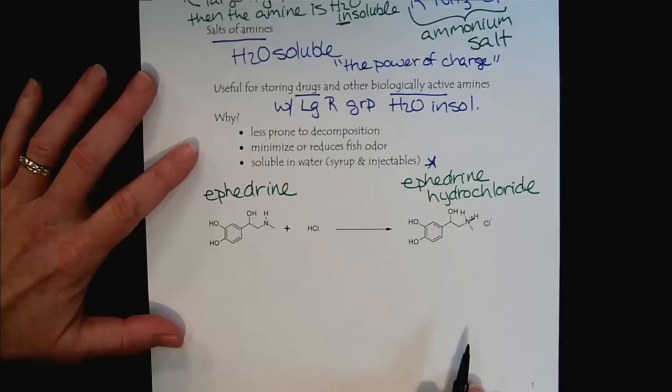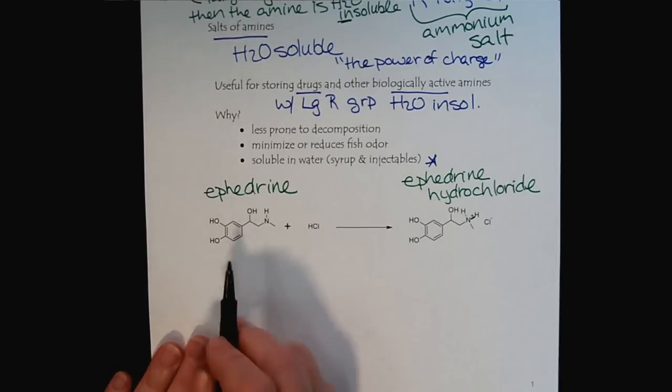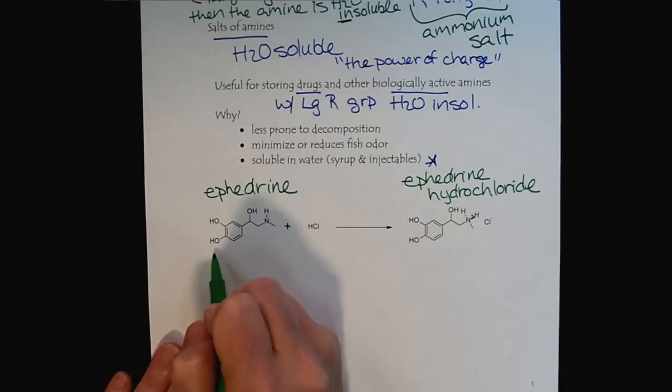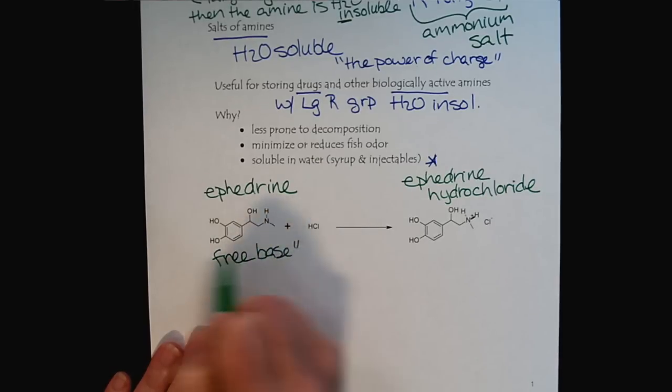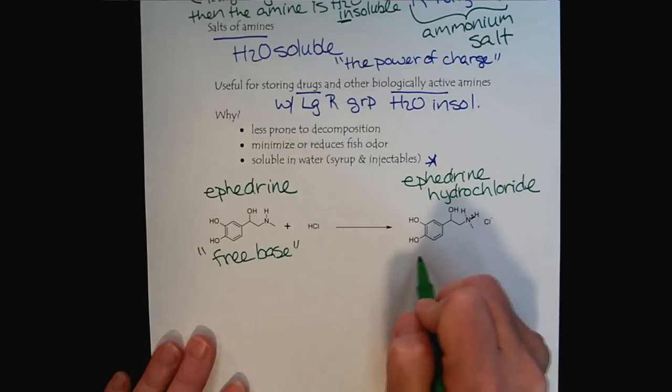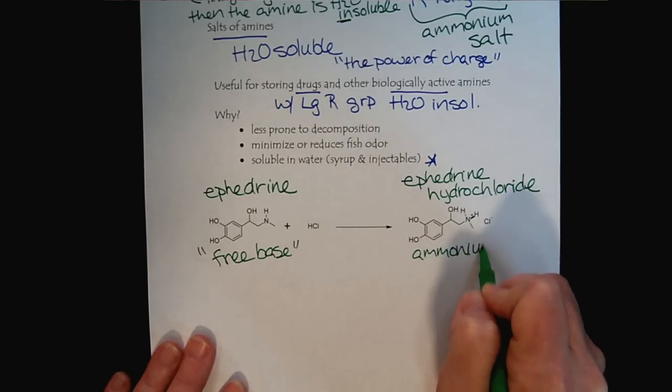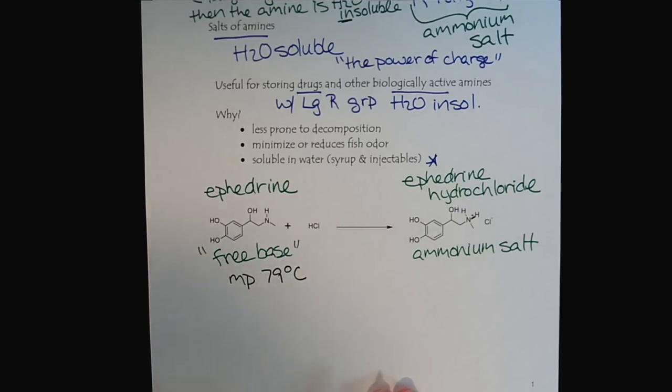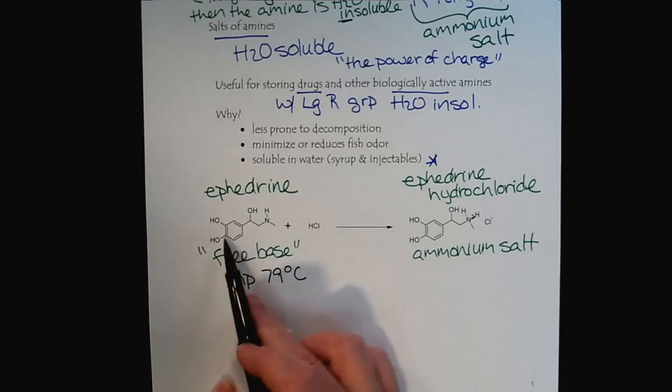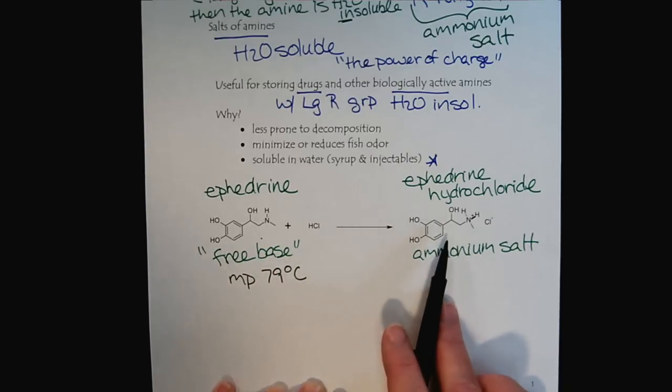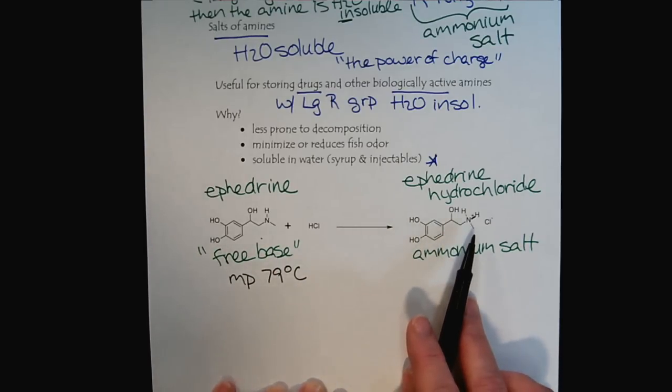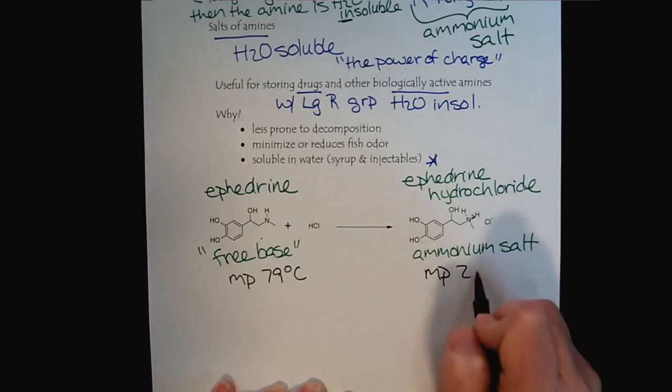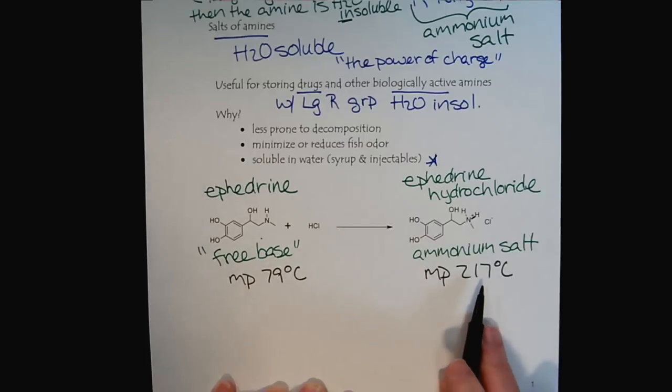Why is this chemistry so important? When we have ephedrine, we would call this the free base. The free base of ephedrine versus the ammonium salt. The free base has a melting point of only 79 degrees C. It's very fragile because this is a covalent, a molecular compound. Even though we have a lot of organic character here, it's still a salt, an ionic compound. Ionic compounds have much higher melting points. This helps to create more stability and less decomposition.